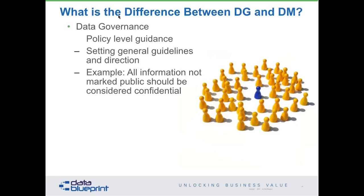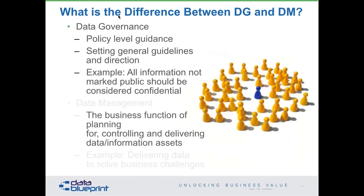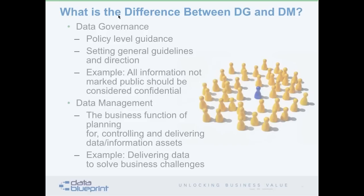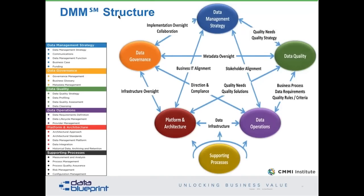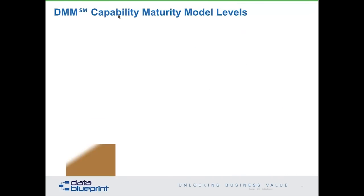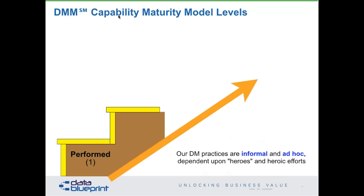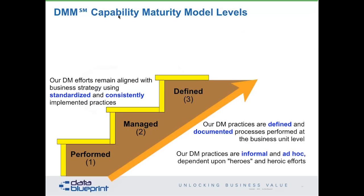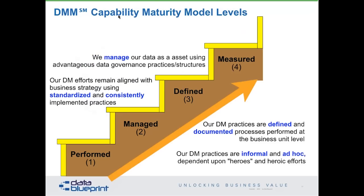There's an important difference between data governance and data management governance. Data governance is about policy, whereas data management is the business of implementing that particular policy. The last webinar we did was on a data management maturity framework that Melanie Mecca and I presented, which the SEI has now adopted as a standard. If you look at this diagram, you see five major functions: data governance, data management strategy, data quality, data operations, and data platform and architecture. Each corresponds to a level: level one is unmanaged, level two is managed, level three is defined, level four is measured, and level five is optimized.